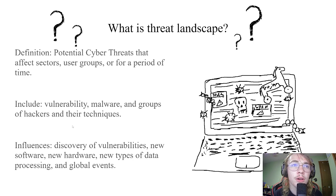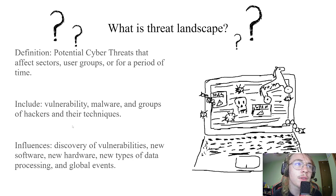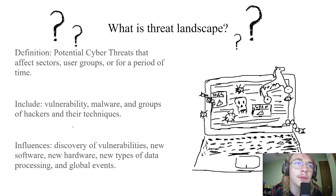Next is new hardware, which is similar to new software. Next is new ways to process data — a good example of this is cloud services and edge computing. This is like the second half to new hardware, so it could take on many of the same issues hardware could have. Lastly is global events; one good and recent example is the COVID-19 pandemic, which caused companies to make a major change to their infrastructure.